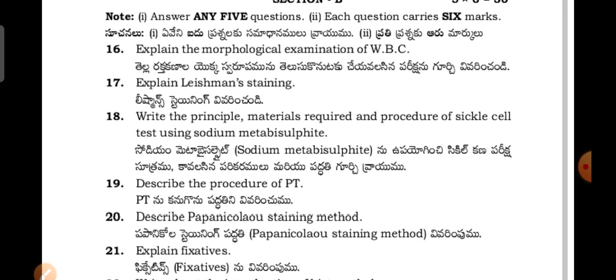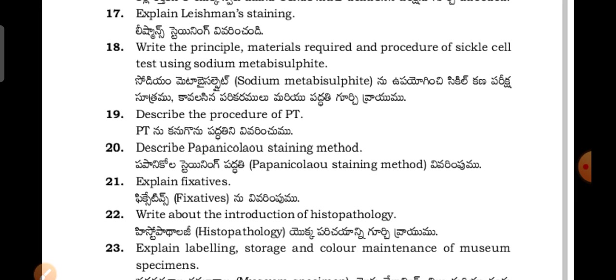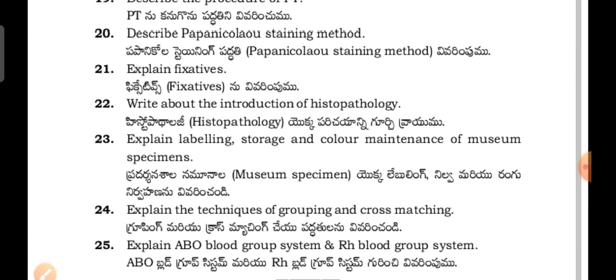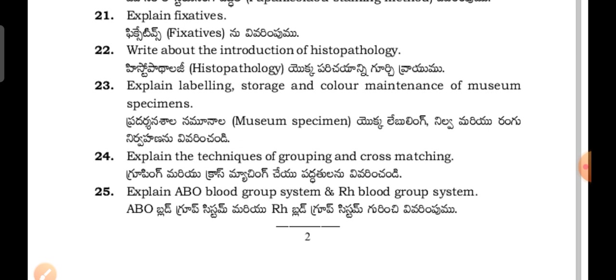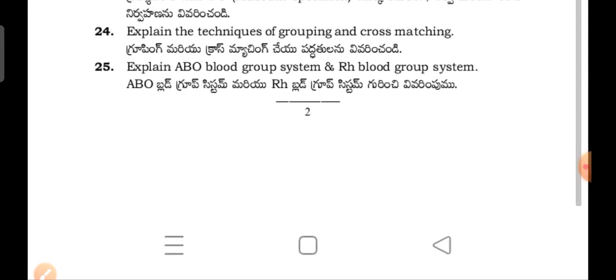Coming to Section B questions: Explain the morphological examination of WBC. Explain the Leishman staining procedure. Write the principles, materials required and procedure for sickle cell test using sodium metabisulfite.